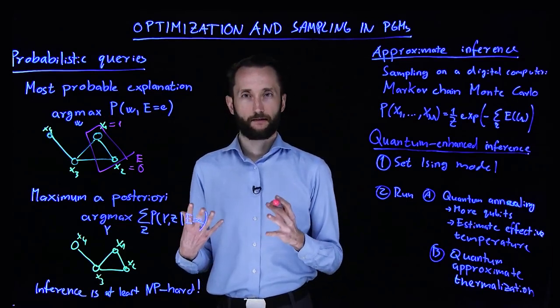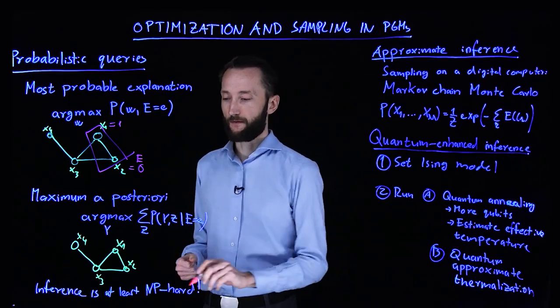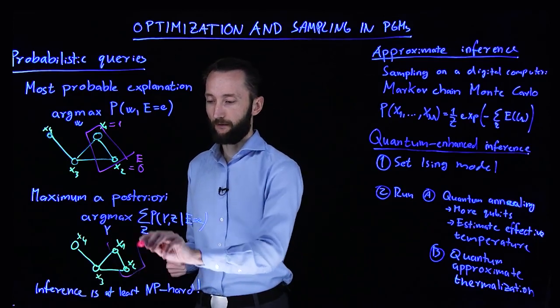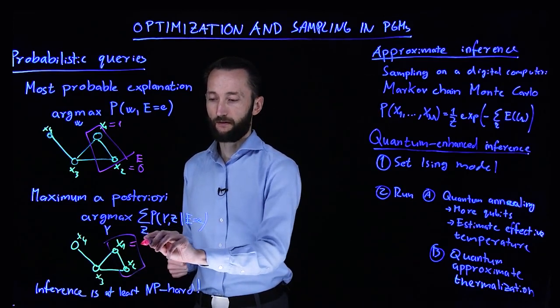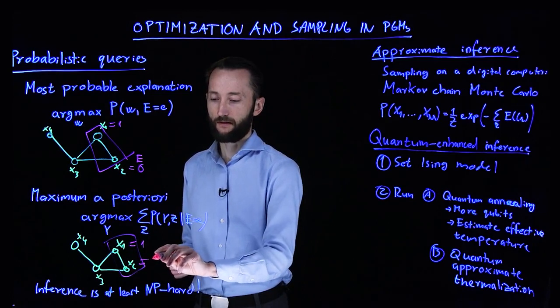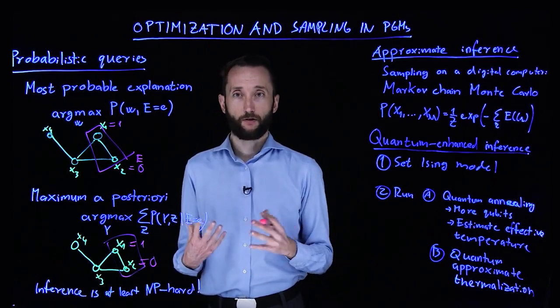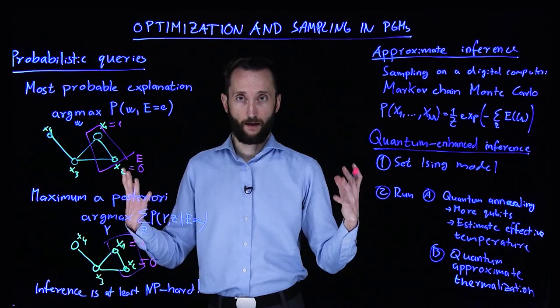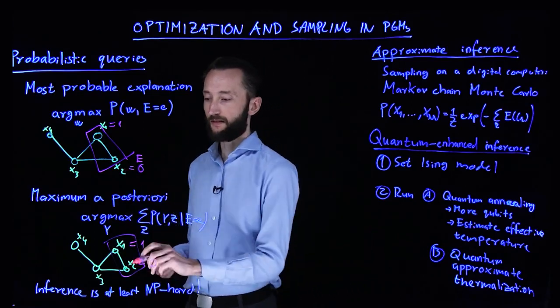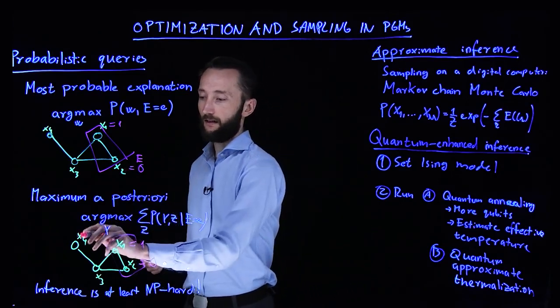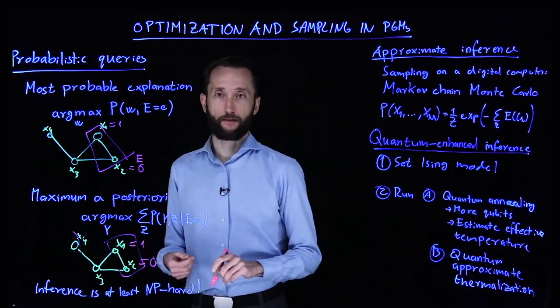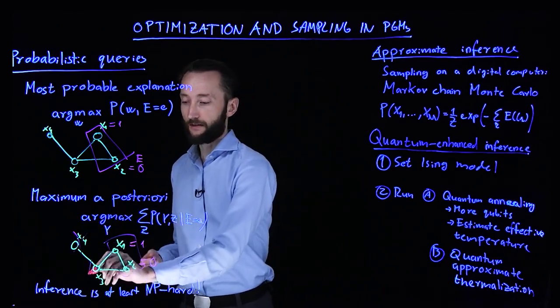The second and somewhat more complicated one is when you are again given the evidence. So you clamp some of these random variables. But you are not interested in the configuration of all of the remaining random variables. For instance, you are not interested in what this one is doing.